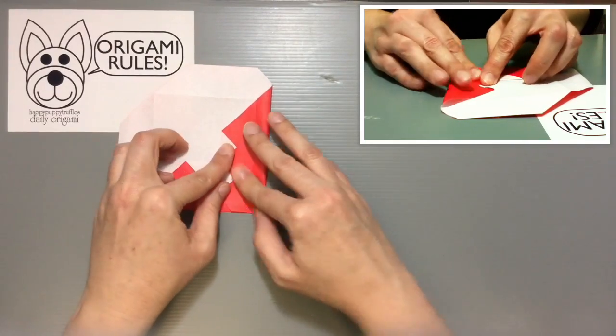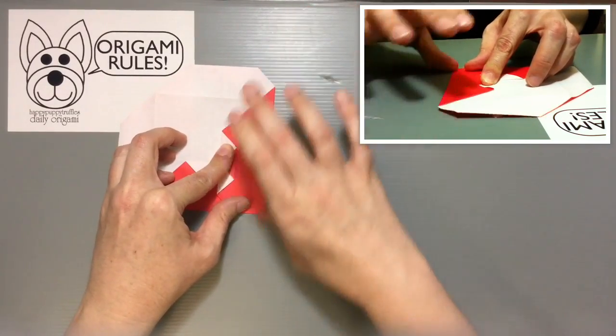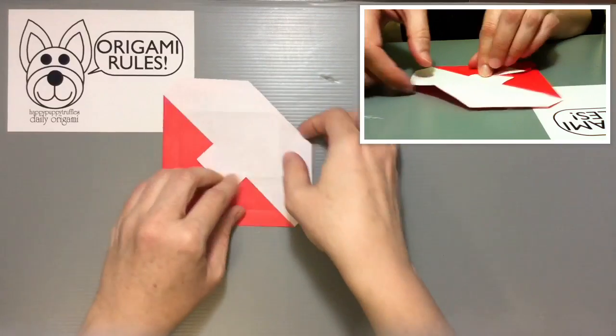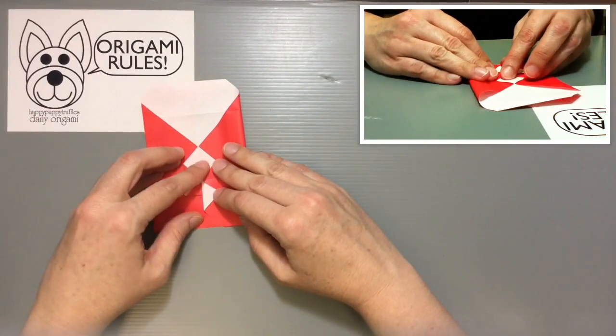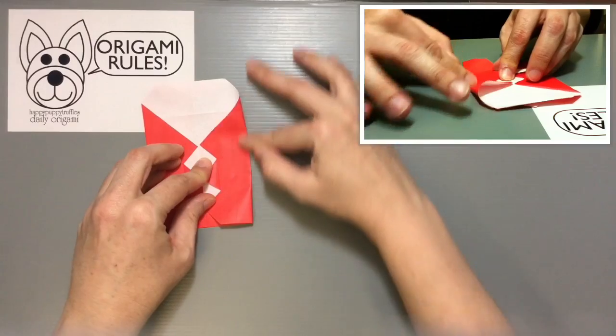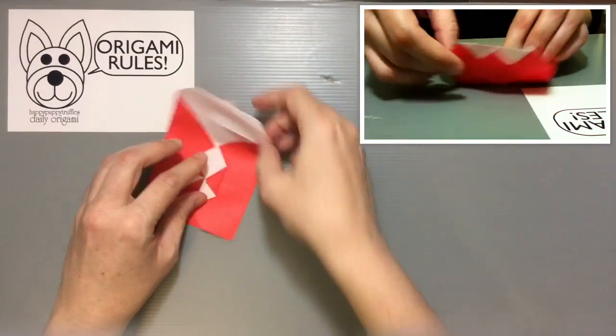You just fold right over what you've worked on. Try to keep everything nice and straight. Do the same thing with this side, and then the last side.